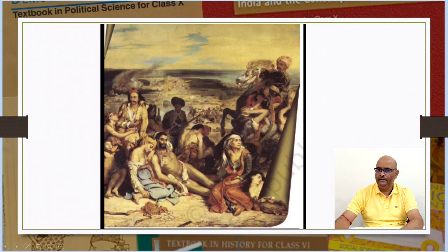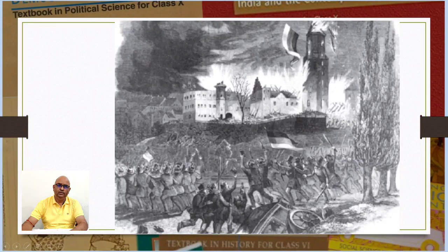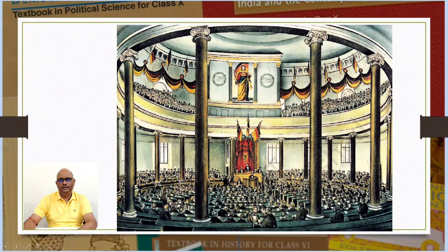Figure 9 relates to what we read about hunger, hardship, and popular revolt — it shows a peasants' uprising in 1848. Figure 10 shows the Frankfurt Parliament being held in the Church of St. Paul's.